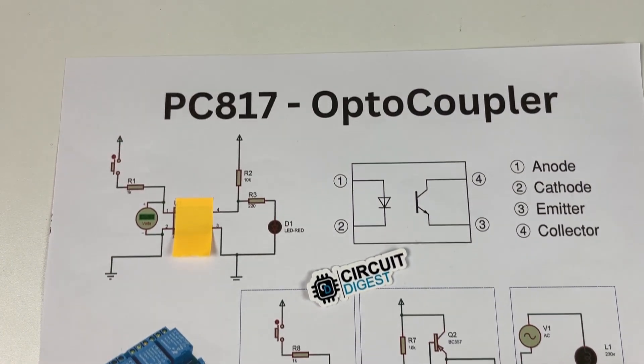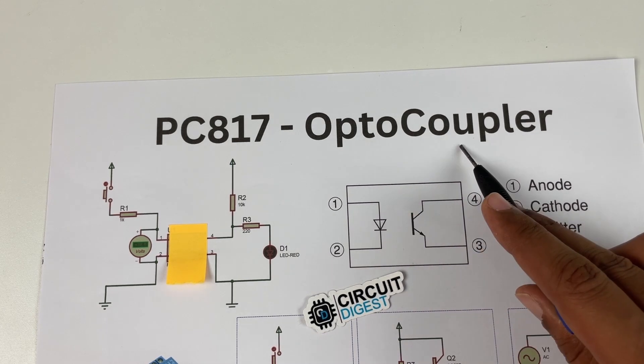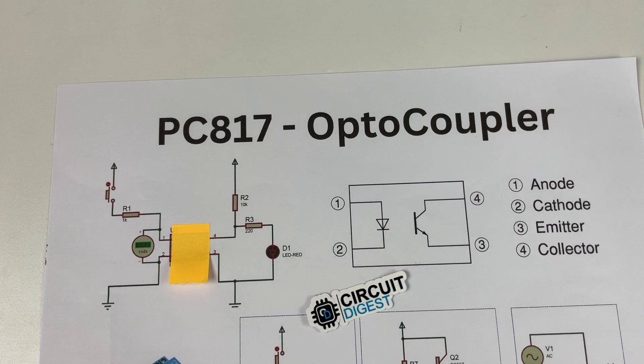Now let's start with the name optocoupler. Opto means light and coupler means something is being connected. So optocoupler means something is being connected using light.